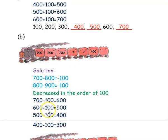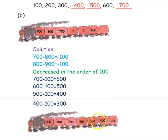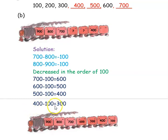From 600, you subtract 100 again — so 600 minus 100 is 500. The next number they have given is 400, and we can check: 500 minus 100 is 400, so our answer is correct. Then next we find the last number — 400 minus 100 is 300. So the missing numbers in the train are 600, 500, and 300.